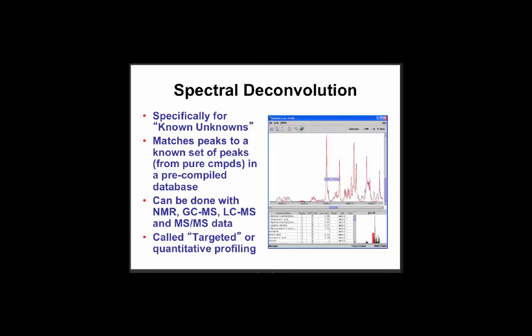For those known unknowns, we do either something called spectral deconvolution or spectral assignment. All you're doing is matching peaks to a known set of peaks from pure compounds using a pre-compiled database. Someone has had to collect pure compounds and run literally thousands of spectra, tabulate them, put them online or in books, and make them searchable. That's been done and is being actively pursued, and it works for NMR, GC-MS, LC-MS, and MS-MS data.